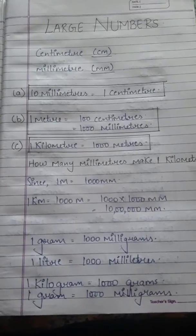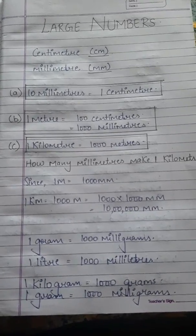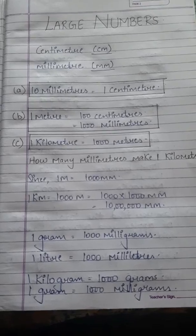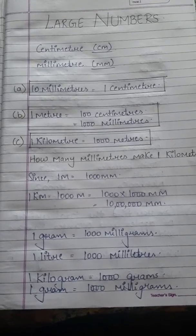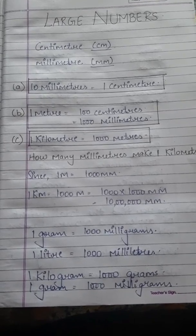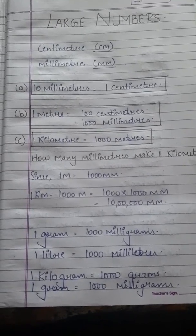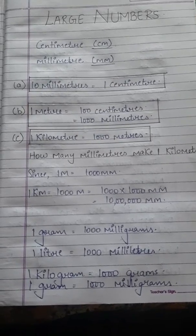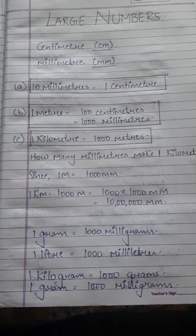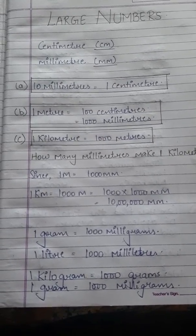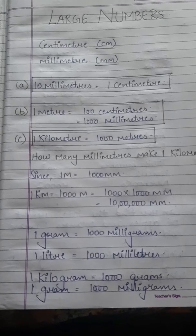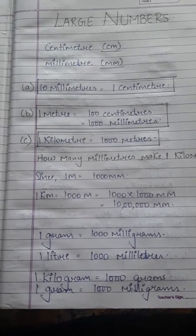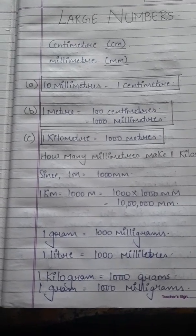Hello children! You all must have understood what we learnt in our earlier class: what is a number, digit, place value according to the Indian system, international system, both. We also learnt about commas. I hope you all have understood, and you all must have done your exercise.